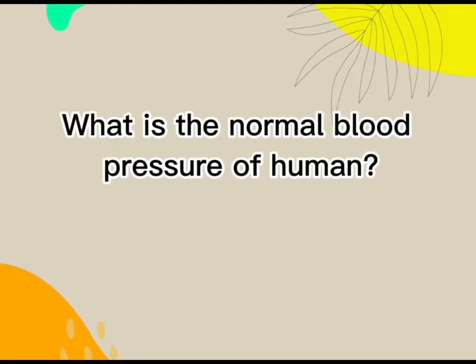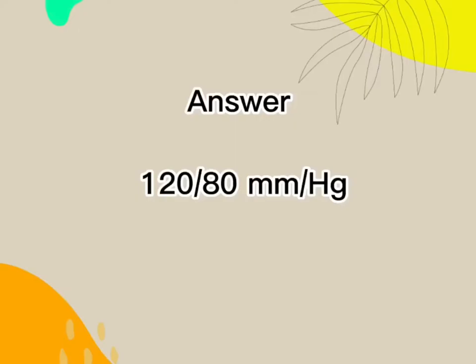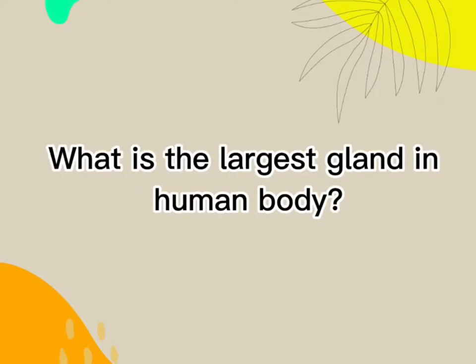What is the normal blood pressure of a human? Answer: 120 over 80 mmHg.